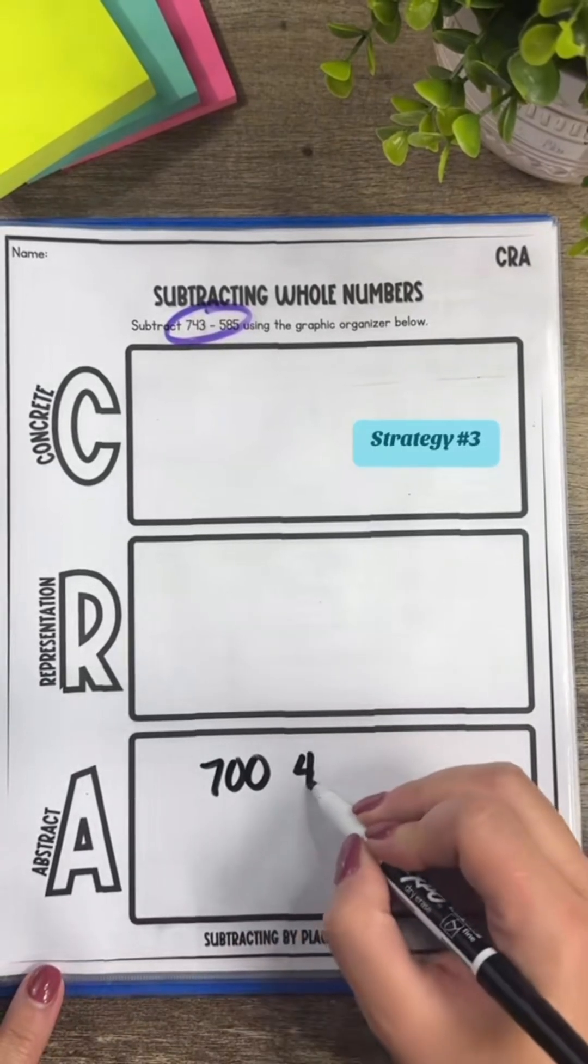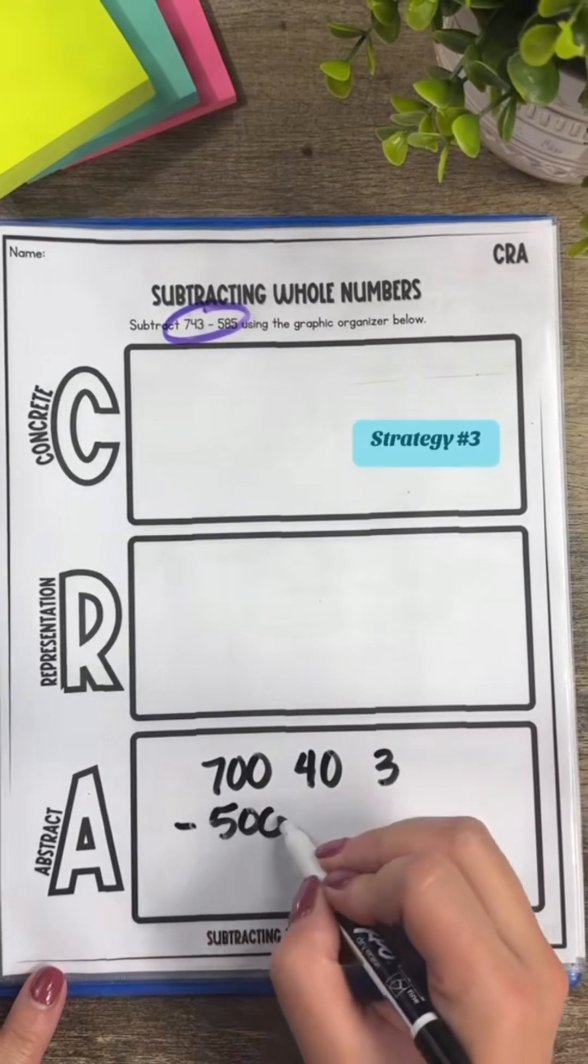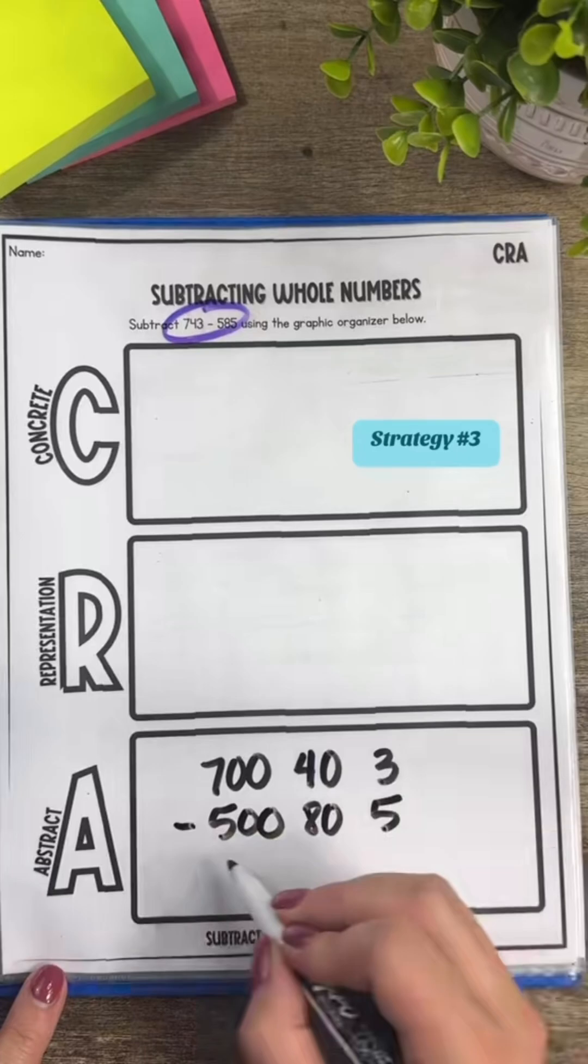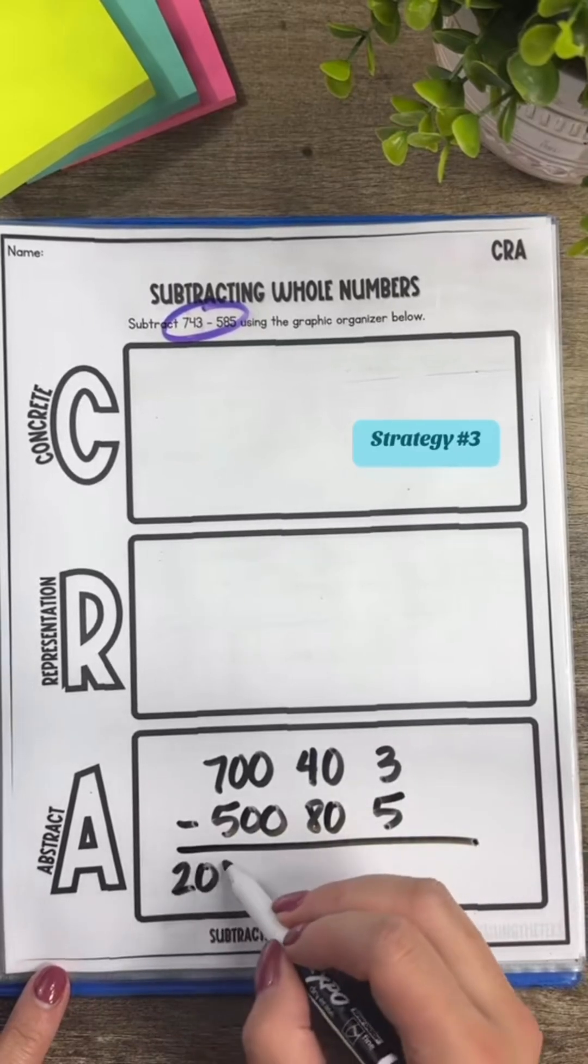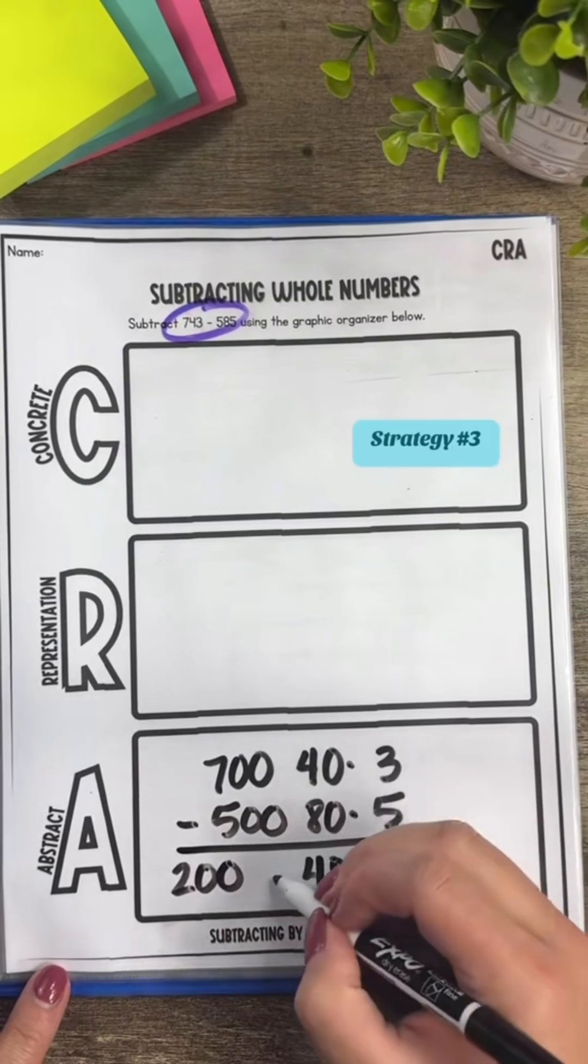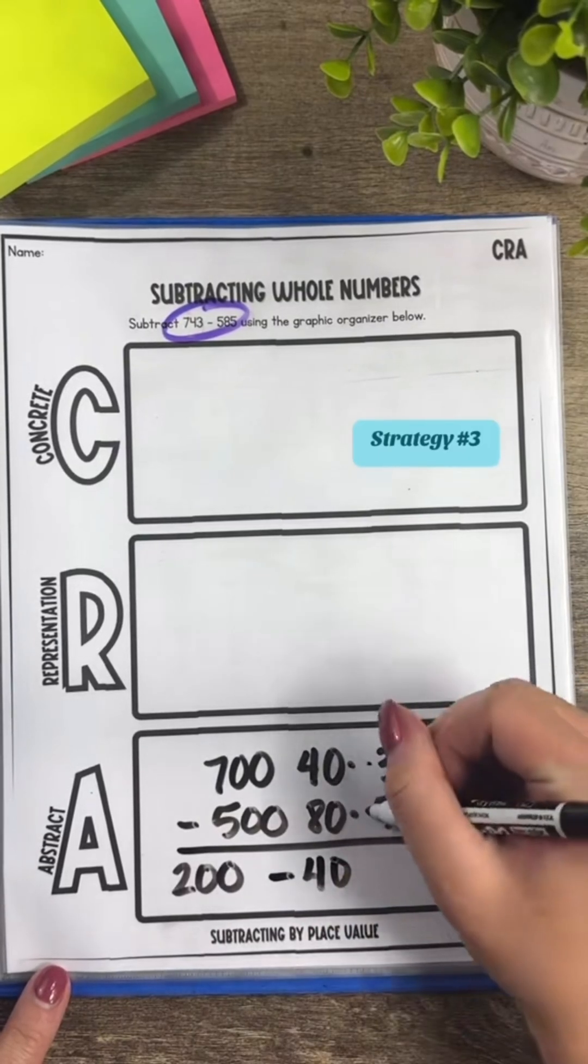Now a common misconception that I saw a lot in my third grade classroom was students thinking that 40 minus 80 is positive 40. It's technically negative 40 and it still works when we subtract. The same concept is used for 3 minus 5. We're going to get a negative 2.